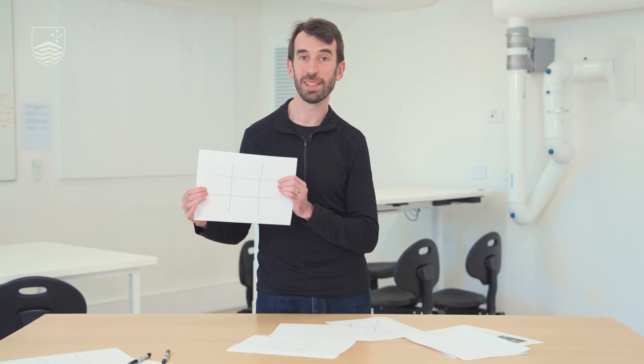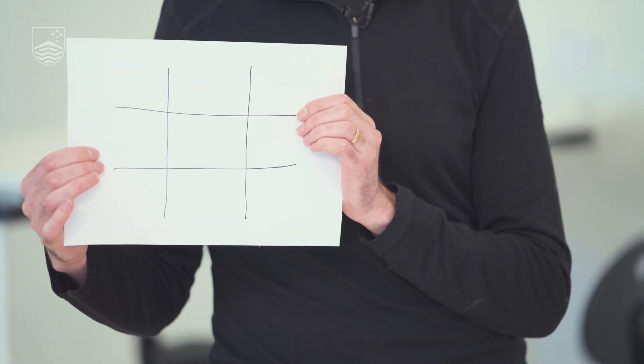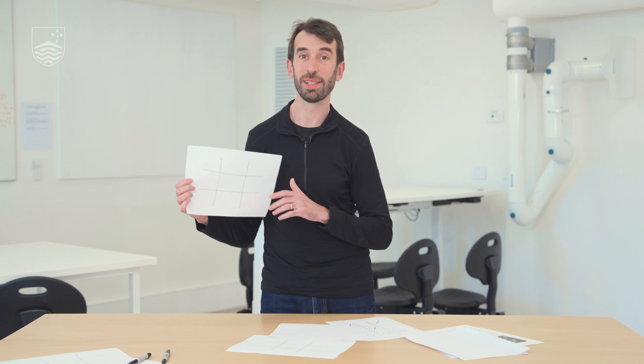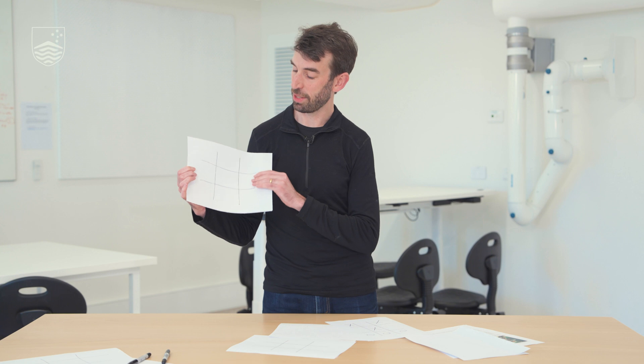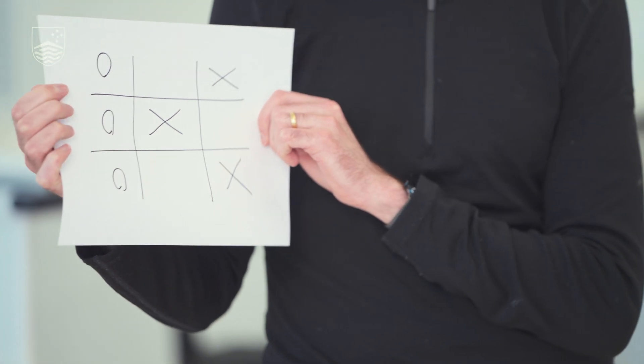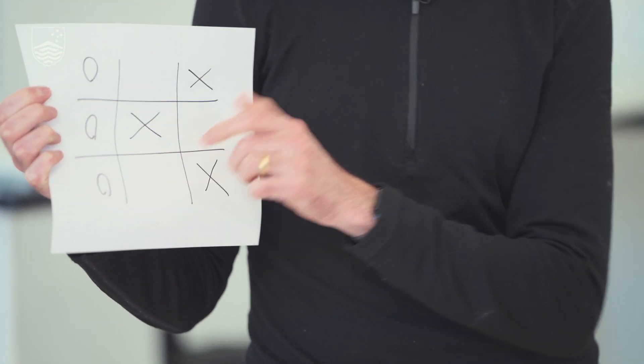Tic-tac-toe is a really simple game that you play with pens and paper. You start with a board like this and there are nine squares to fill in. There are two players and each one has either a nought or a cross as their mark, and they take turns making marks in one of the squares. The idea of the game is to get three marks in a row. In this example game the player with the circles or noughts has won because they've got three marks in a vertical row here.